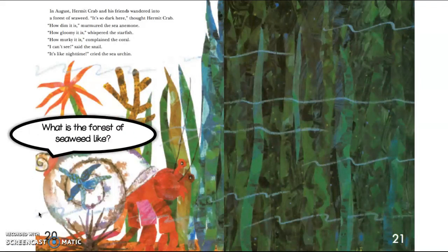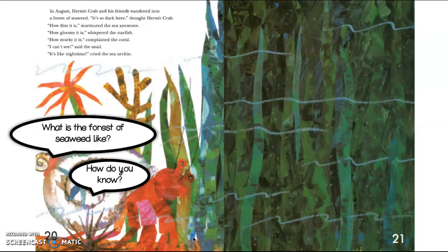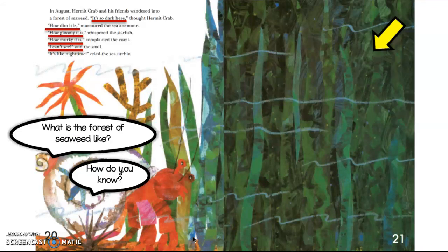What is the forest of seaweed like? What kind of words would you use to describe this forest of seaweed? Yeah, it is pretty dark and gloomy. How would we be able to answer this? Well, first thing we can do is look in the text. Hermit Crab said it's so dark in here. The sea anemone says how dim is it — dim means there's not a lot of light. How gloomy is it? That reminds me of a rainy day when it's not sunny and it's just kind of yucky. They also said how murky is it, and 'I can't see, it's like night time.' So all those words help us to understand what the forest of seaweed is like.